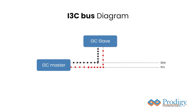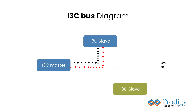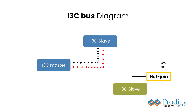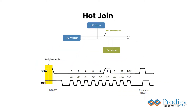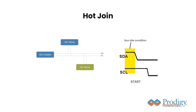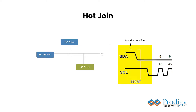The I3C bus protocol supports a mechanism for targets to join the I3C bus after the bus has already been configured. This mechanism is called hot join. The target must wait for the bus idle condition before sending the hot join request as per I3C specifications. The bus idle condition is defined as a period during which the bus available status is maintained for a duration of at least T-idle, that is, 200 microseconds, meaning that the SCL and SDA lines are both held high for the T-idle period.